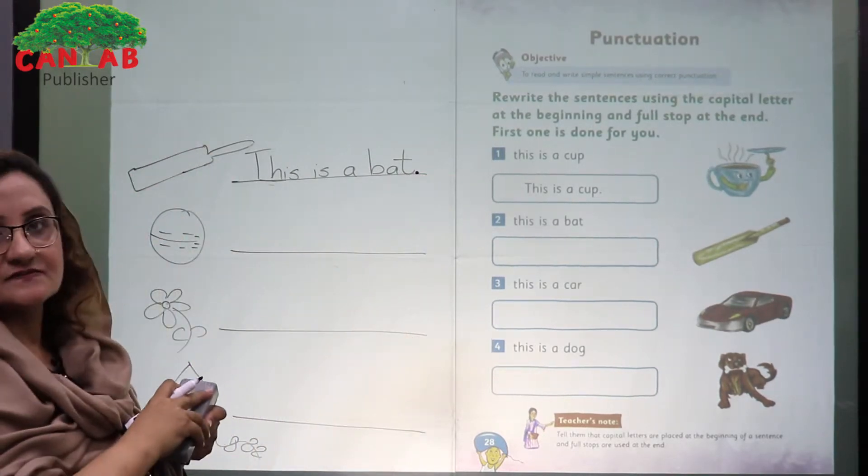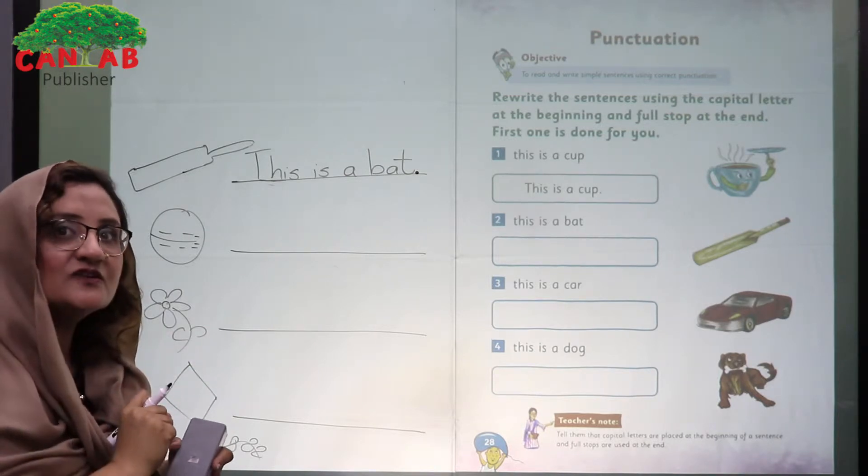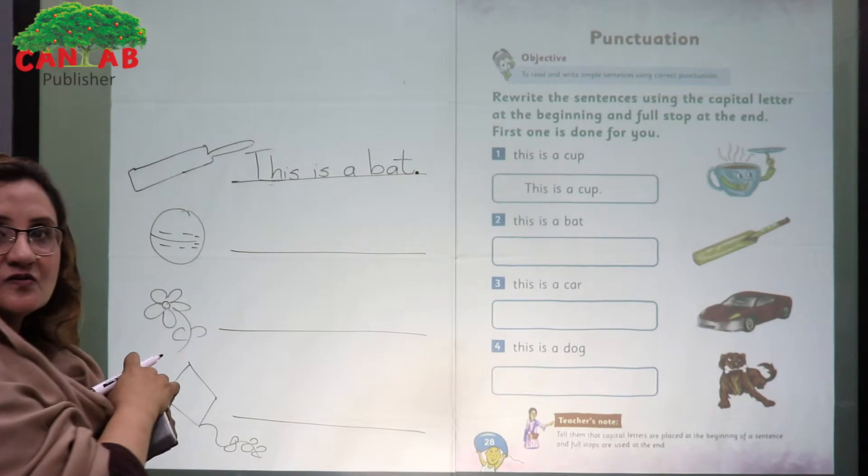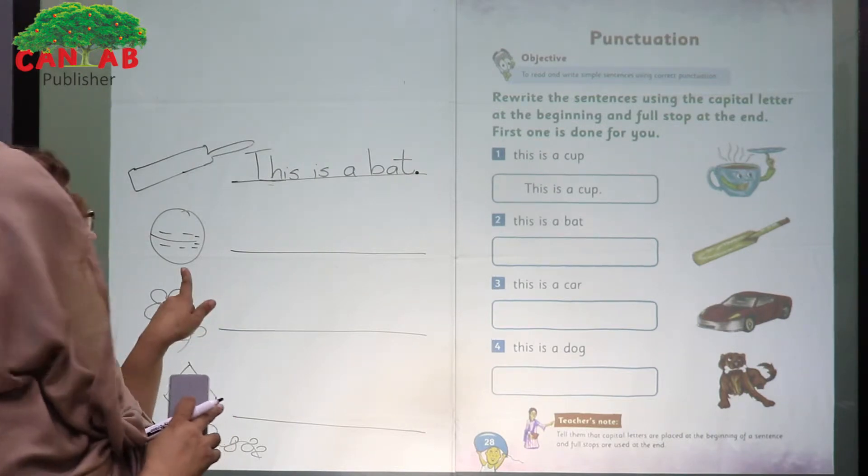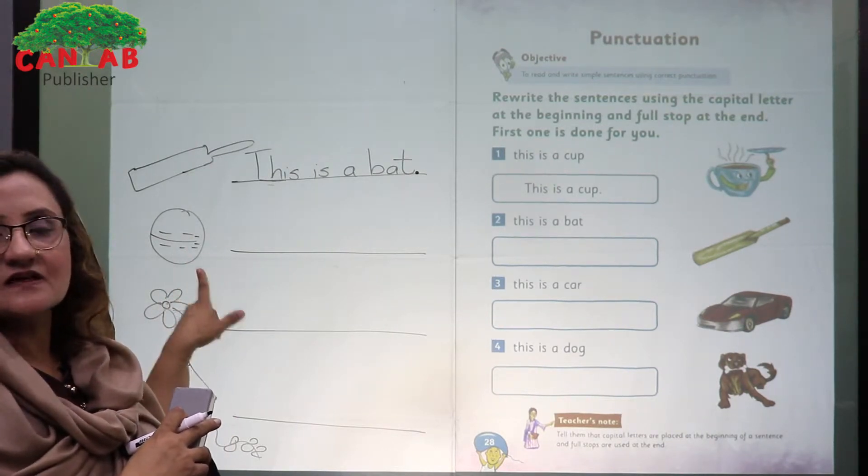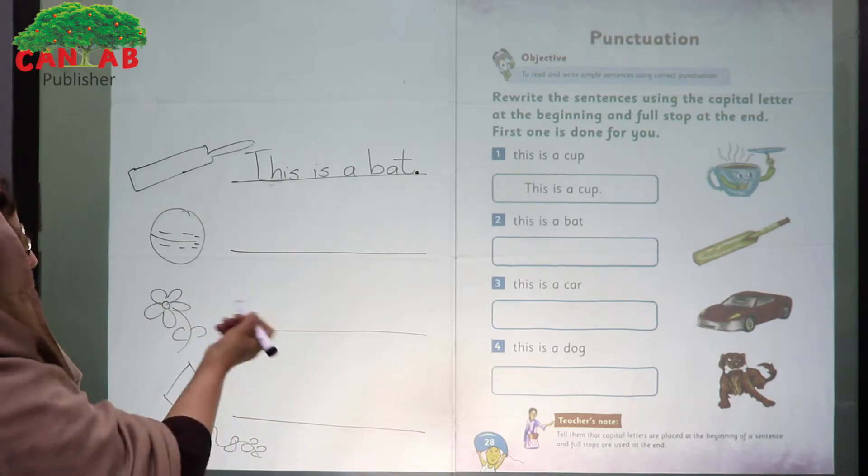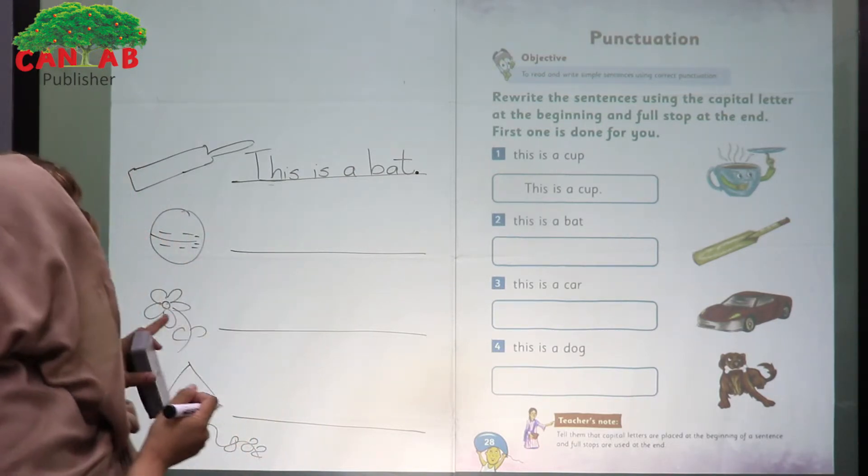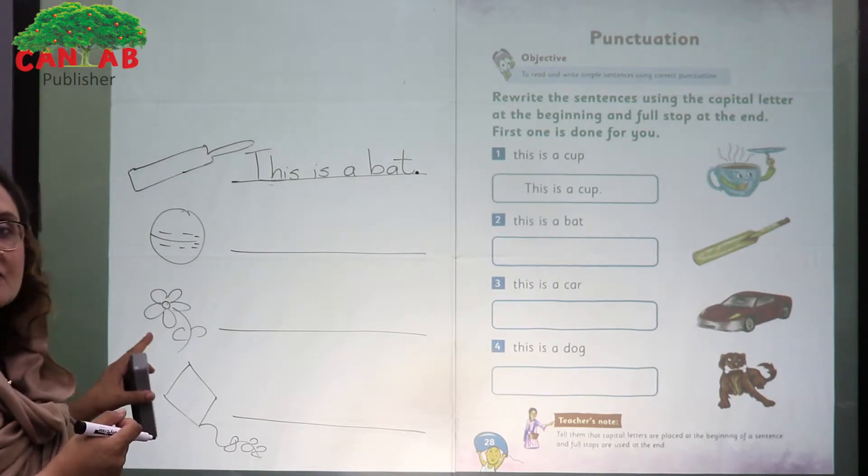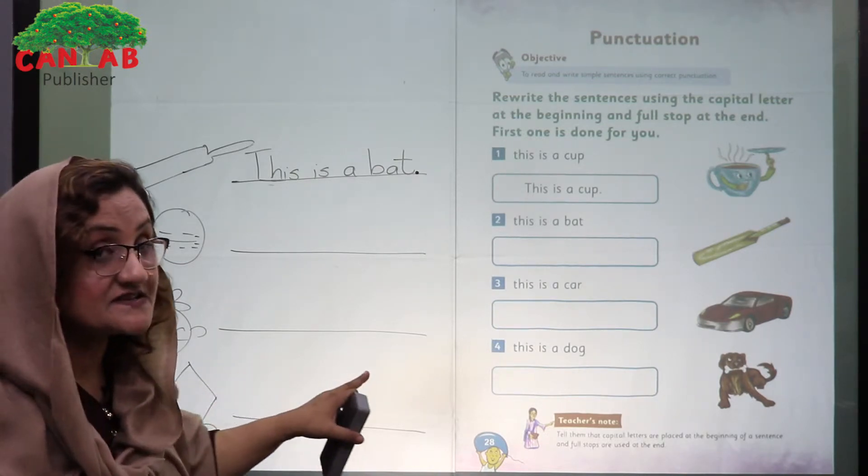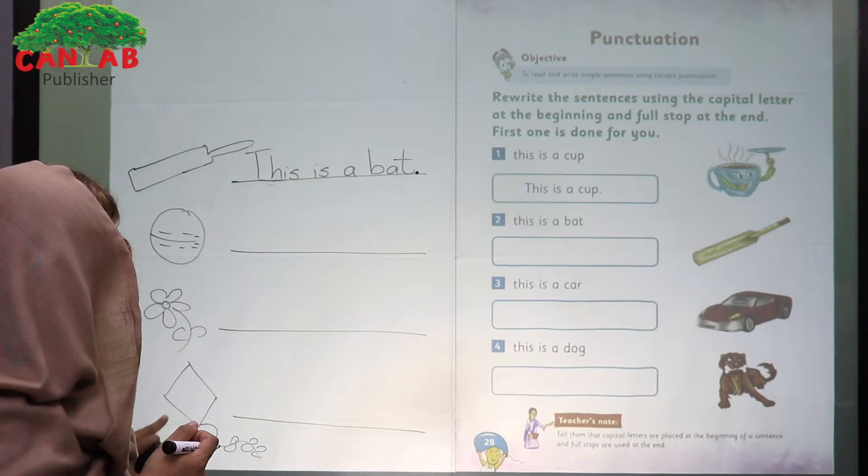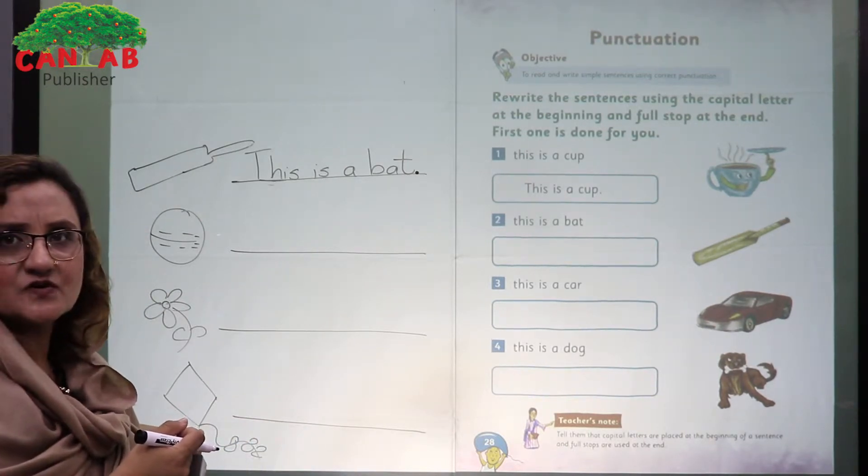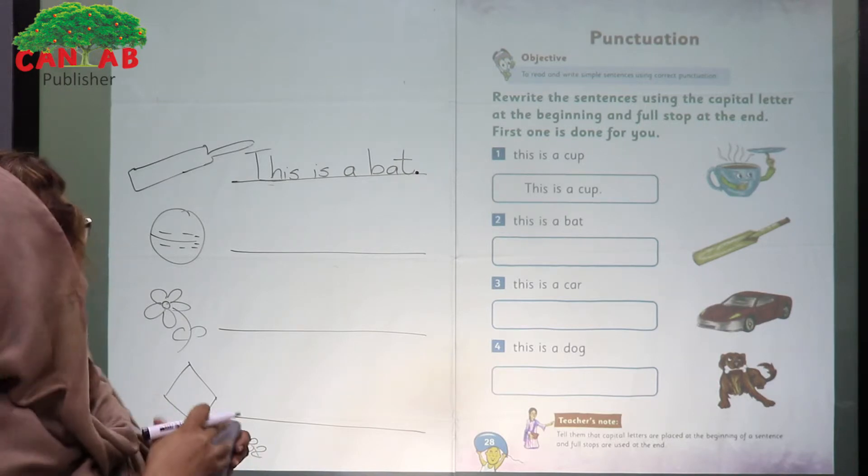Now Saima, can you please help me in making a sentence using this picture? This is a ball. Can you please write this is a ball for me? Very good. What is this, Ali? This is a flower. Can you please write this sentence? Good. What is this? This is a kite. Can you please write a sentence for me?